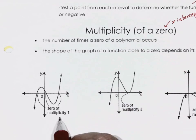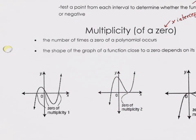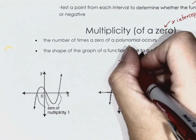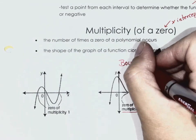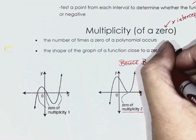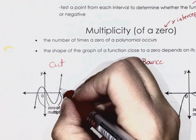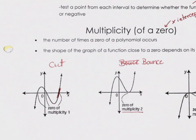If you have an x-intercept with a multiplicity of one, you've got one of them — it cuts the x-axis. This is what we've done our whole career: here's the x-intercept, we connect right through it and keep going. So multiplicity of one is a cut — it cuts right through the x-axis.